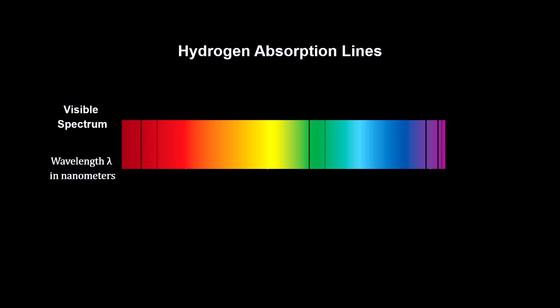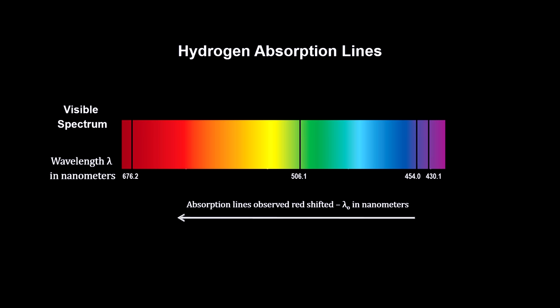And light from a receding star has its wavelengths lengthened. We see the lines shift to the red. They are said to be red-shifted.